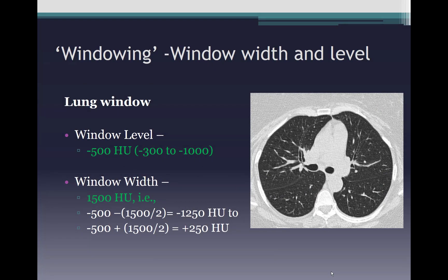Another commonly used window is the lung window. Since air in the lung is of much lower density, the ideal window level is minus 500 Hounsfield units with a window width of 1500 Hounsfield units, allowing optimal visualization of the lungs. There are also other windows such as a bone window to look at the rib cage and spine. This concludes our session on CT image display — covering windowing concepts and the different reconstructions used in cardiac CT interpretation. Thank you for your attention.